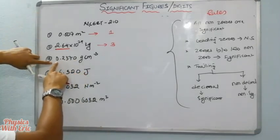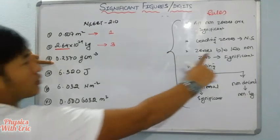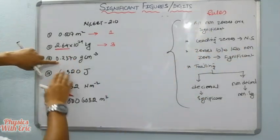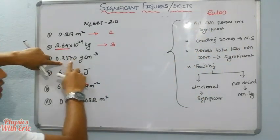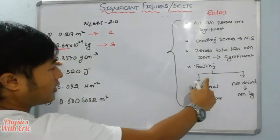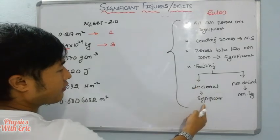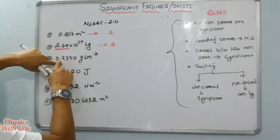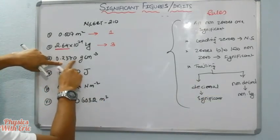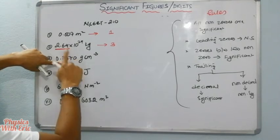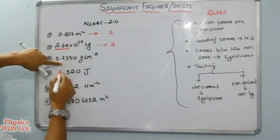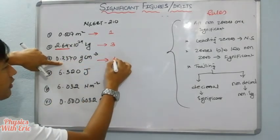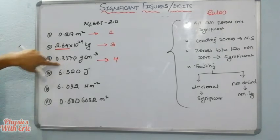For 0.2370: first, the leading zero is non-significant. Then the trailing zero after the decimal is significant. So the significant figures are 2, 3, 7, and 0 — giving 4 significant figures.